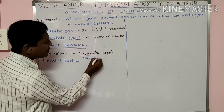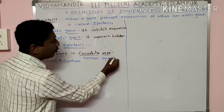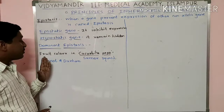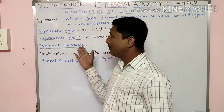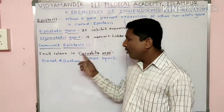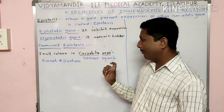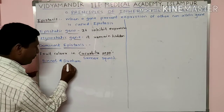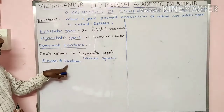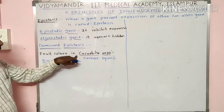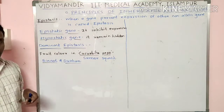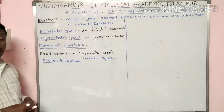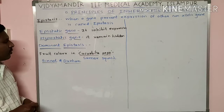Fruit color in summer squash — that is, kukurbeta papo (similar to cucumber/squash) — shows epistasis in its inheritance. Dominant epistasis was discovered by two scientists, Cnaught and Durham, who studied fruit color in summer squash. There are three types of fruit colors in kukurbeta papo.